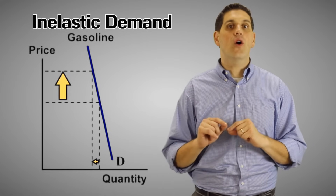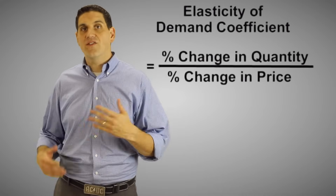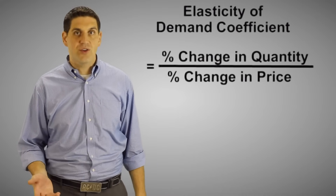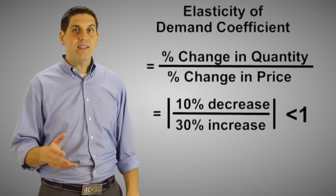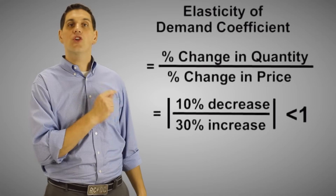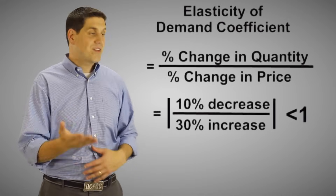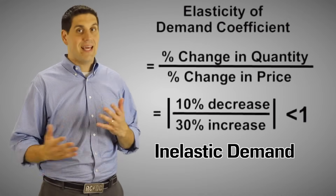And it has an elasticity coefficient that is less than one. There's going to be a little bit of math in microeconomics, but it's nothing crazy. The elasticity of demand coefficient is the percent change in quantity divided by the percent change in price, which is not hard at all. All it's trying to say is that when there's a small change in quantity relative to a big change in price, this number is less than one. And if it's less than one, it's inelastic demand.